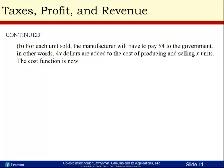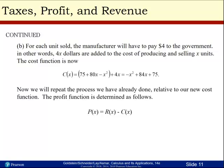Now let's do the B part. For each unit sold, the manufacturer has to pay $4 to the government. In other words, 4 times x dollars are added to the cost of producing and selling x units. The cost function is now 75 plus 80x minus x squared plus the 4x. Simplifying that, we get negative x squared plus 84x plus 75. Repeat the whole process again for profit equals revenue minus cost. Plugging all of that in and simplifying, we get that the profit equation is now negative 2x squared plus 116x minus 75.